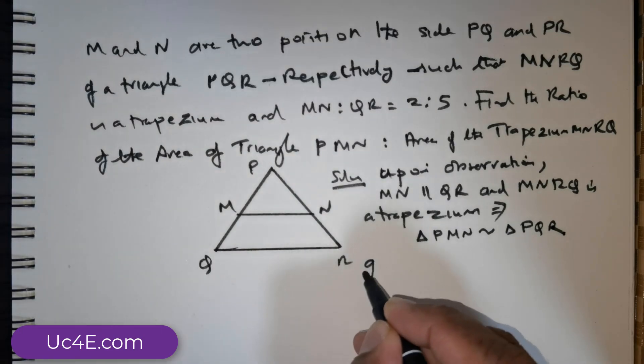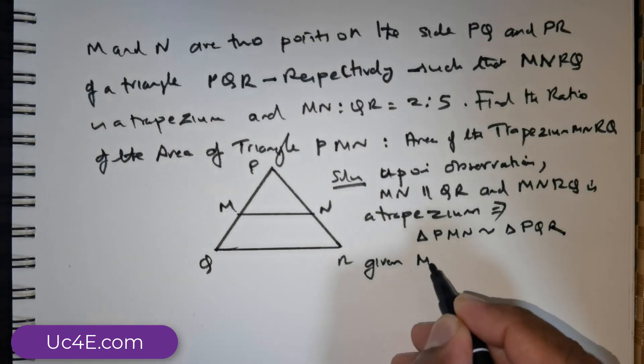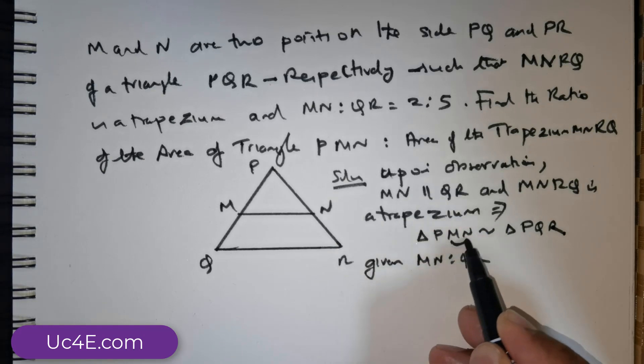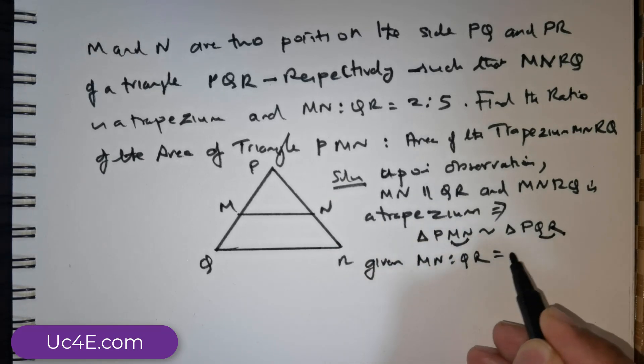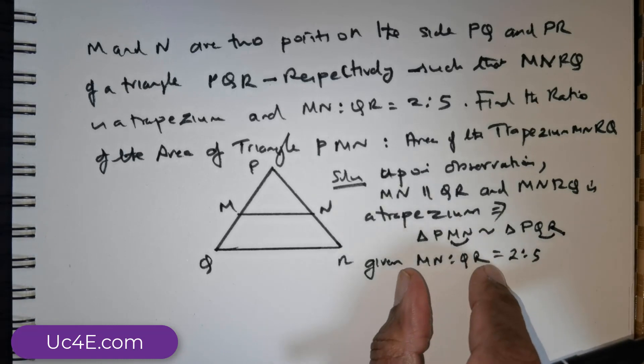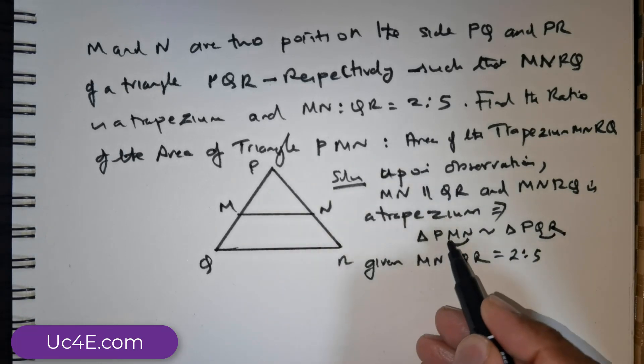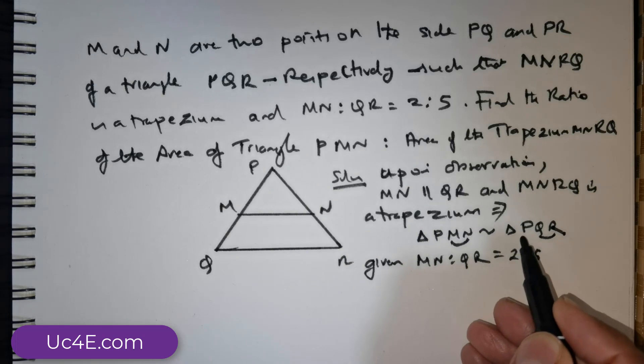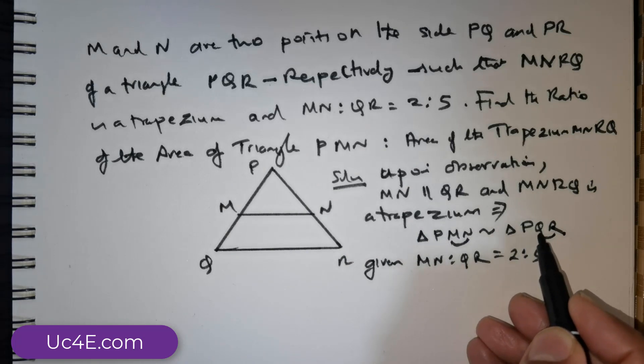Now it is given that MN is to QR, MN is to QR is in the ratio of 2 is to 5. And that triangle PMN is similar to triangle PQR.